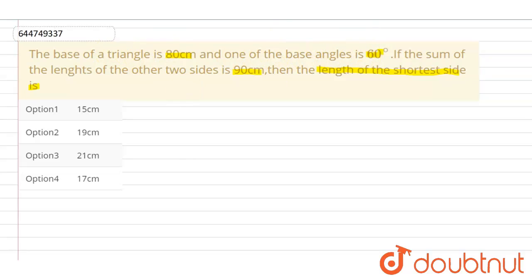Now let's draw the triangle first. Let's say this is our triangle. Now let's say this is vertex A, this is vertex B, and this is vertex C.